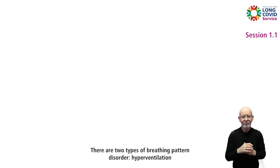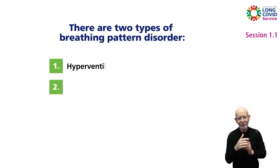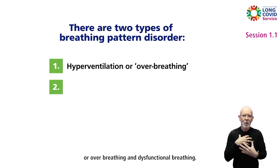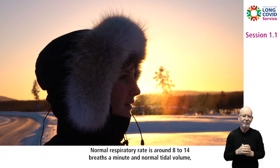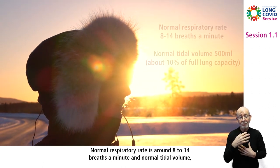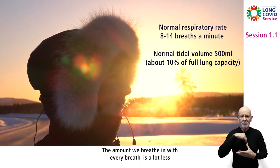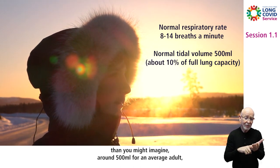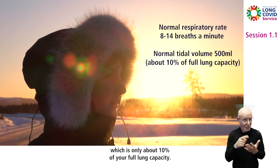There are two types of breathing pattern disorder: hyperventilation or over-breathing, and dysfunctional breathing. Normal respiratory rate is around 8 to 14 breaths a minute, and normal tidal volume — the amount we breathe in with every breath — is a lot less than you might imagine, around 500 ml for an average adult, which is only about 10% of your full lung capacity.